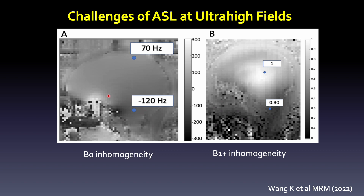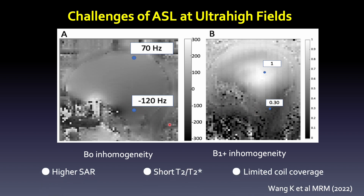However, the B0 and B1 inhomogeneity also increase at ultra-high field, as shown in this B0 field map. One ppm offset is about 300 hertz at 7T, and it's only 120 hertz at 3T. The B1 can decrease by 30 percent at the labeling region. On top of that, we have high SAR, shortened T2, T2 star, and limited coil coverage.